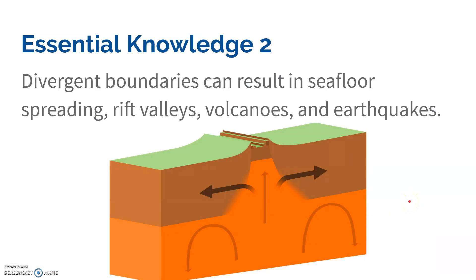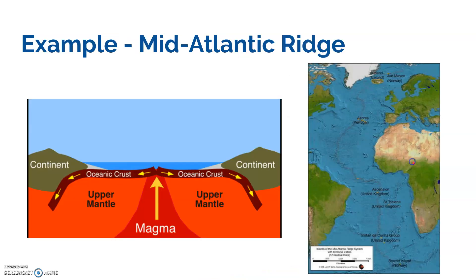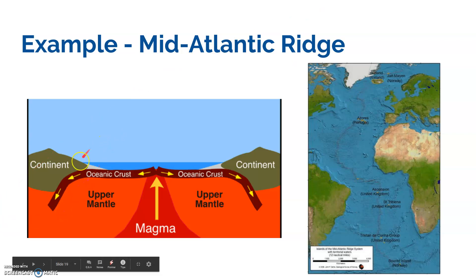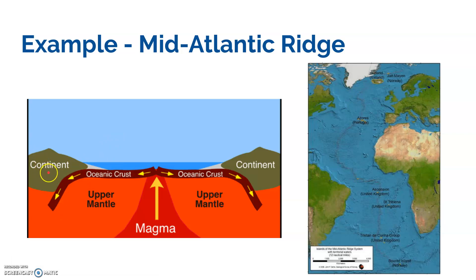Next we have divergent boundaries. Divergent boundaries are plates going away from each other. This results in seafloor spreading, rift valleys, volcanoes, and earthquakes. An important example to know is the Mid-Atlantic Ridge — one giant ridge where magma bubbles up, forms new crust as it cools, and pushes the old crust away. On the other side of the plate we actually end up seeing subduction happening with the continental plate.